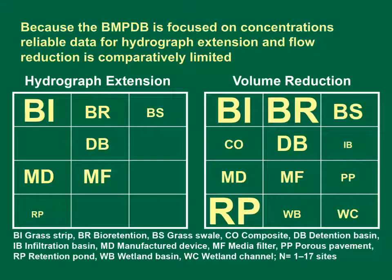Because the international BMP database is focused on concentrations, reliable data for hydrograph extension and flow reduction is comparatively limited. These word clouds indicate the availability of sites with seven or more storm events that meet flow monitoring quality checks. The smallest font indicates a category with one site and the largest font indicates a category with 17 selected sites. We calculated hydrograph extension and flow reduction statistics using these data. Because the number of sites with sufficient data are limited, we should apply the hydrograph extension and flow reduction statistics using professional judgment.